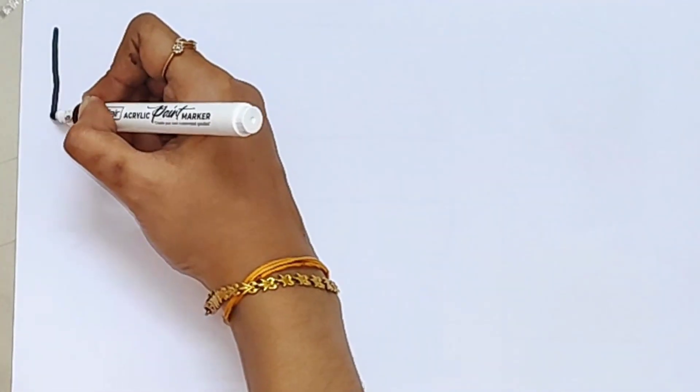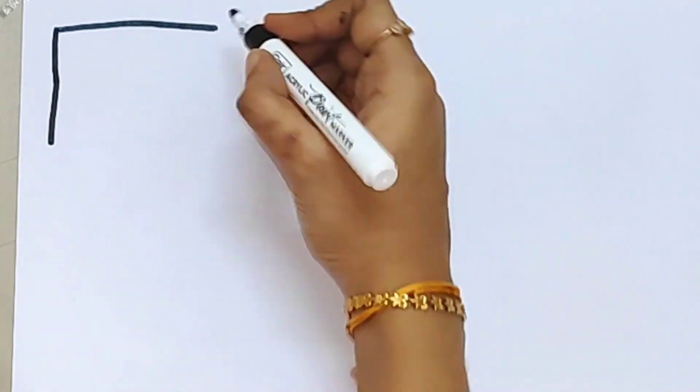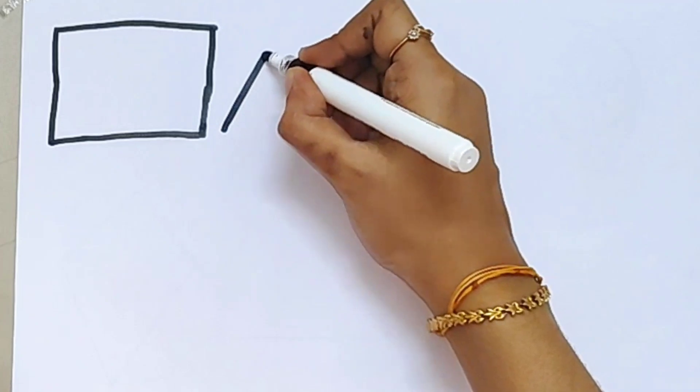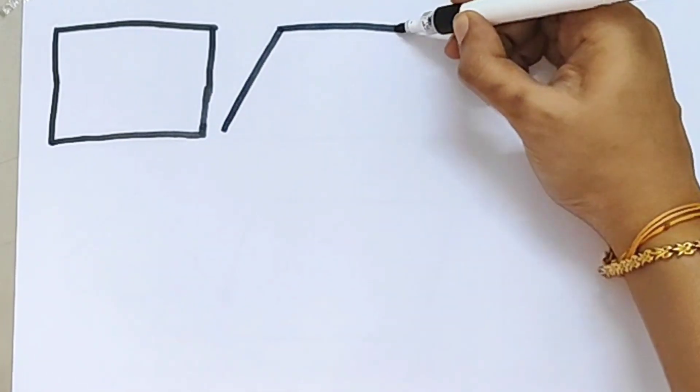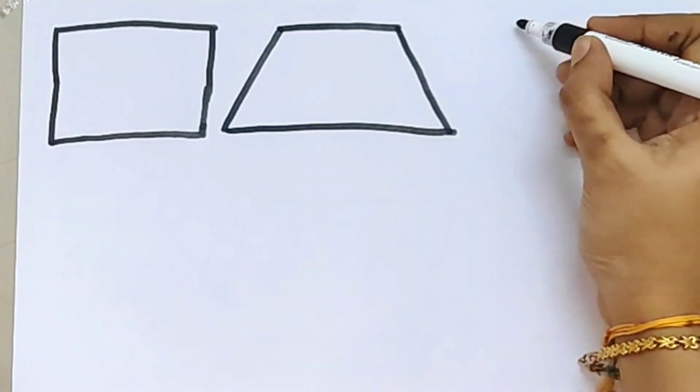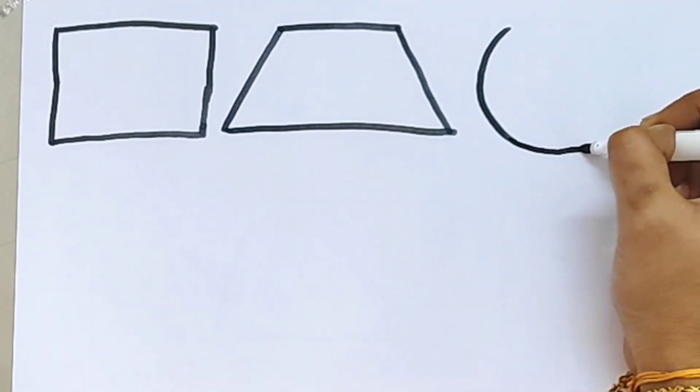Let's draw some 2D shapes. This is a square, this is a trapezoid, this is a circle.